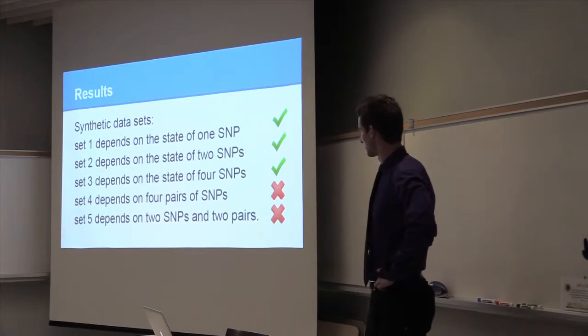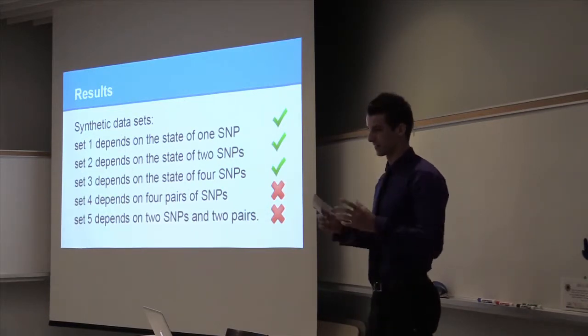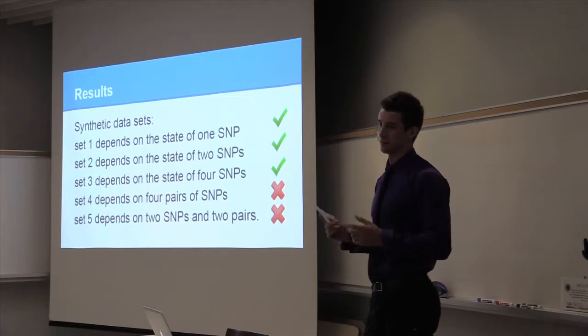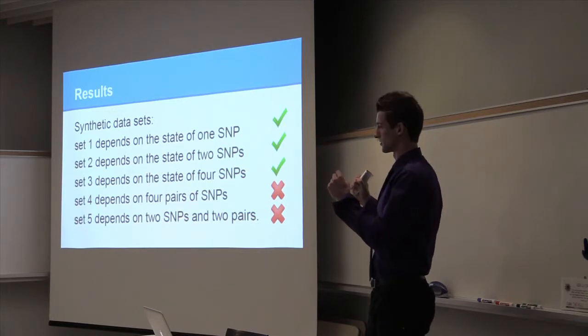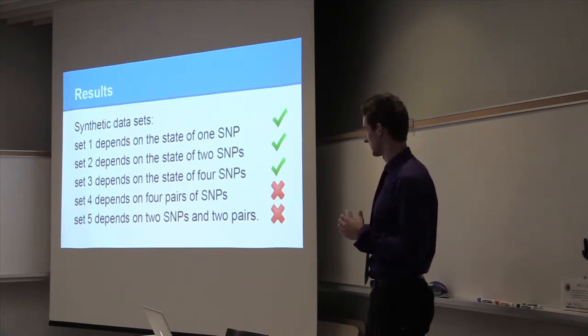So set two depends on the state of two SNPs. So after generating the associator map, I'm looking for the best clique of two, in other words, the largest edge weight, and then the largest edge weight was between the two SNP features that control the trait, which was correct according to his answer key.